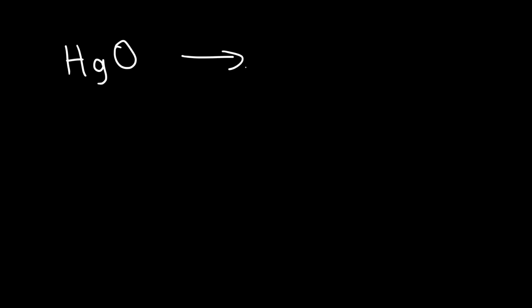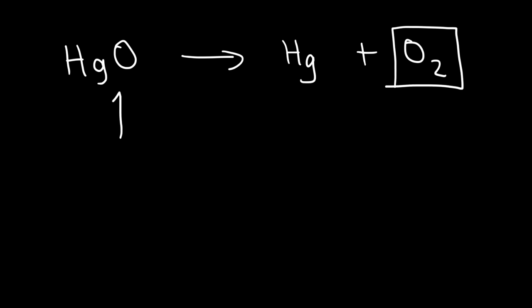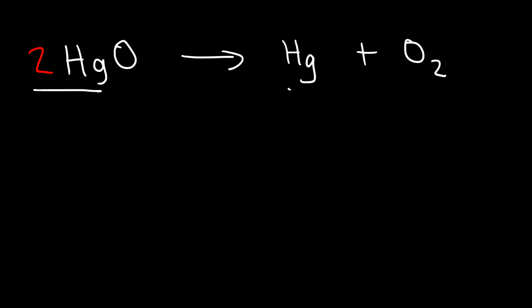Now let's try another example. Mercury oxide, when heated, decomposes to elemental mercury and oxygen gas. Currently the number of mercury atoms are the same on both sides. However, we have two oxygen atoms on the right side and only one on the left. So we put a 2 as a coefficient in front of mercury oxide. Now we have two oxygen atoms on both sides, but two mercury atoms on the left and only one on the right. So we also put a 2 in front of mercury. If you don't see a number, it's the same as having a 1 in front of it. Now the reaction is balanced — two oxygen atoms and two mercury atoms on both sides.